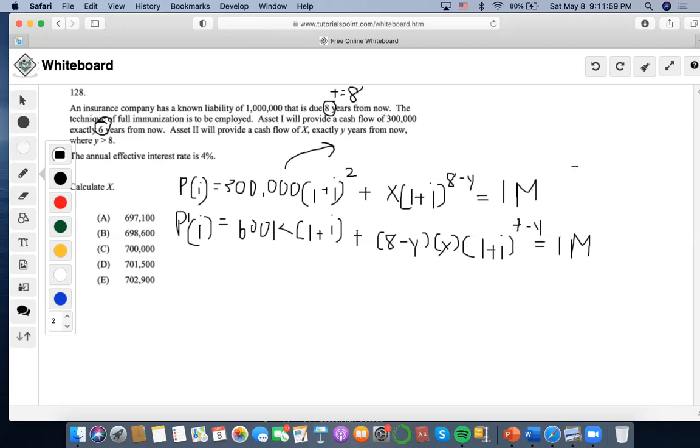Then after I do that I could split this into two parts, 1 plus i to the 8 and 1 plus i to the negative y. So I can move this other side, so I can divide it by 1.04 to the 8. And then I'll just end up getting that x, 1.04, negative y, equals.